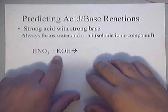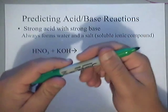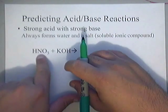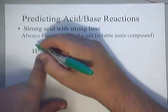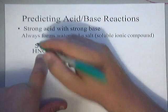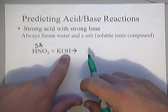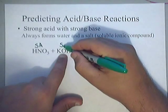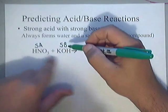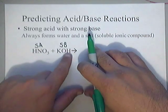Now what I like to do is label everything as far as being strong or weak and if it's an acid or if it's a base. This is one of the strong acids that you had to memorize and I'm going to write SA above it to let me remember that it's a strong acid. This is one of the strong bases that you memorize. I'm going to write SB above it. That way I know it's a strong base.